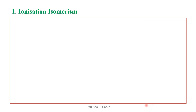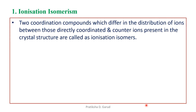Let's start with the first type: ionization isomerism. Two coordination compounds which differ in the distribution of ions between those directly coordinated and the counter ions present in the crystal structure are known as ionization isomers. When there is an interchange or exchange of ions between the inner and outer coordination sphere, it results in the formation of ionization isomerism.